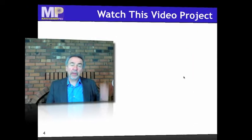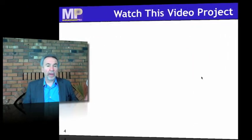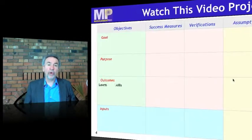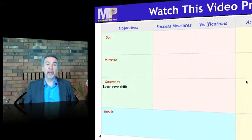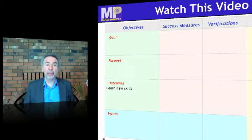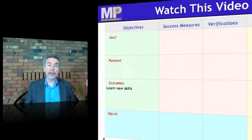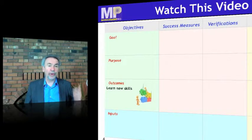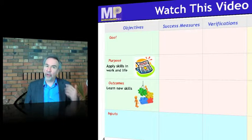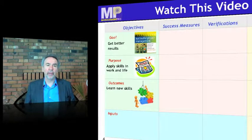You're watching this video — we can consider this a project with objectives. One of your objectives, certainly, is to learn new skills. We're fleshing out the first column of the logical framework, which is called objectives. And if you learn new skills, you'll be able to apply them in work and life. If you apply them in work and life, you should get better results.